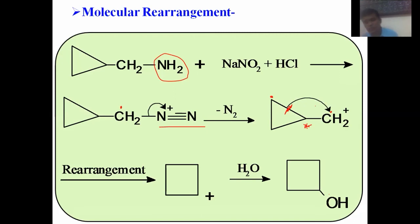This concludes the discussion of the first reaction intermediate — the carbocation. We have covered: introduction to carbocations, their structure, their generation, their stability, and finally, the reactivity of the carbocation intermediate.